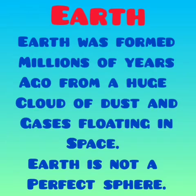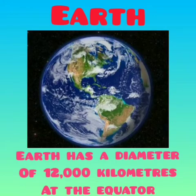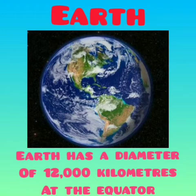The planet Earth on which we live is a huge ball revolving around the Sun. Earth revolves at a rate of 108,000 km per hour. Scientists believe that Earth was formed millions of years ago from a huge cloud of dust and gases floating in space. Over a period of time, it cooled and hardened.